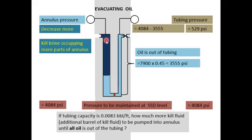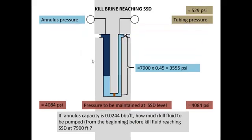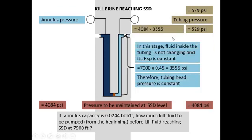The annulus pressure continues to decrease as more kill brine fills the annulus. We can calculate the barrels required to displace all the oil out of the tubing by multiplying the tubing capacity by the height of the oil column. At some point the kill brine will reach the SSD. During this period, the fluid inside the tubing hasn't changed — it is still the original completion brine — so the tubing head pressure remains unchanged at 529 psi.